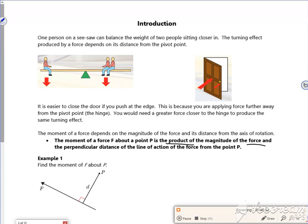The idea is that if one person sits at the end of the seesaw, they can balance two people sitting further in. And also the idea that it's easier to push the door from where the handle is than it is more towards where the hinge is.